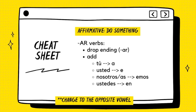Here's a quick cheat sheet on affirmative commands. For AR verbs, drop your ending and add: A in your tú form, E in your usted form, Emos in your nosotros or nosotras form, and En in your ustedes form. For ER and IR verbs, drop your ending and add: E to your tú form, A to your usted form, Amos to your nosotros and nosotras form, and An in your ustedes form.